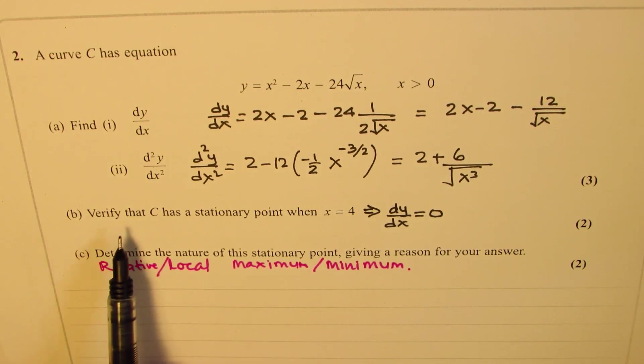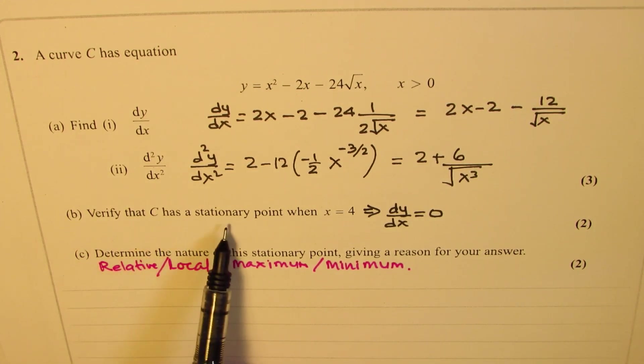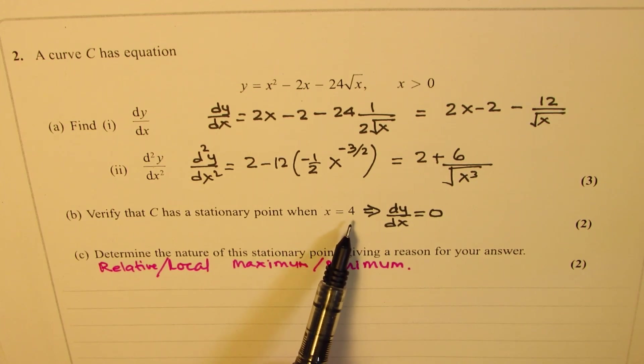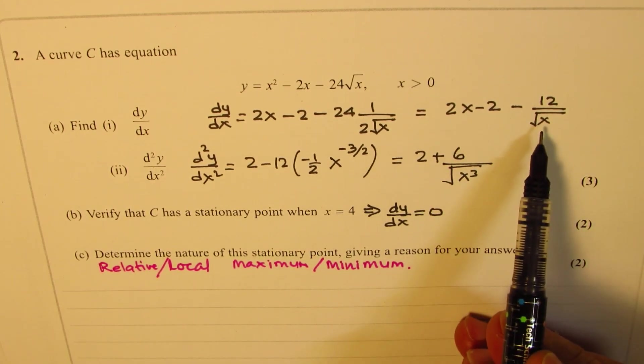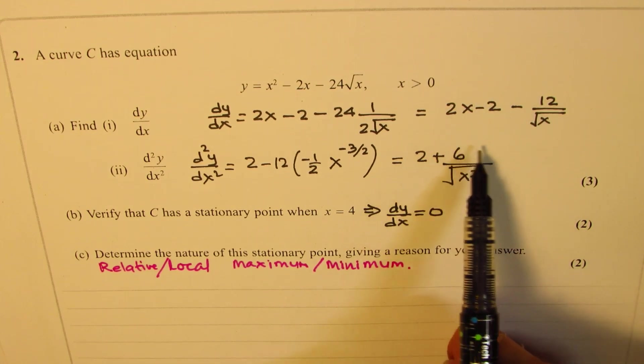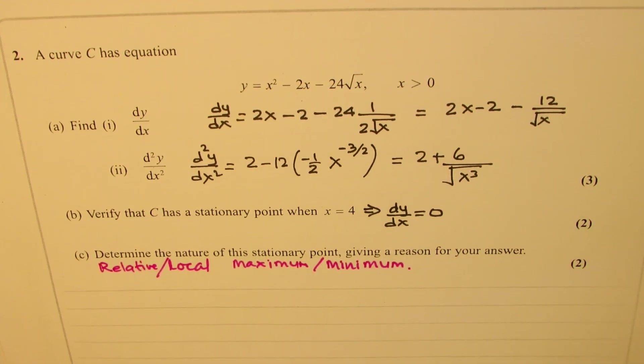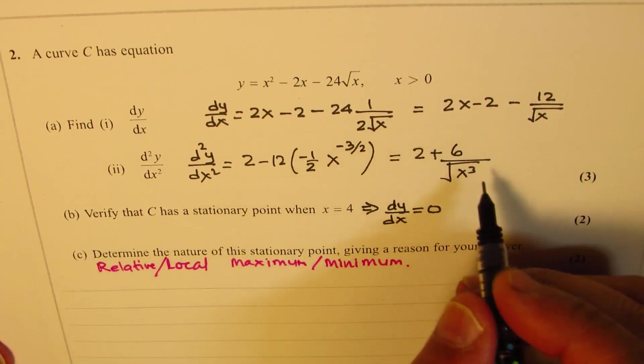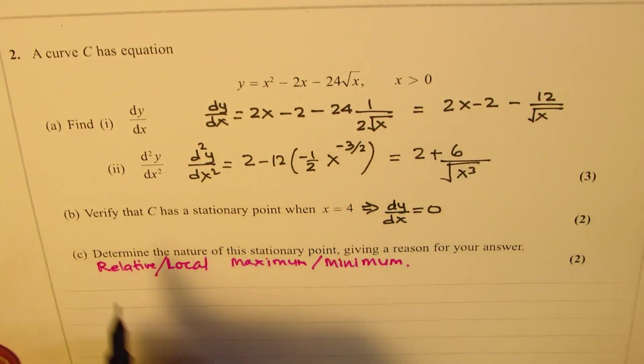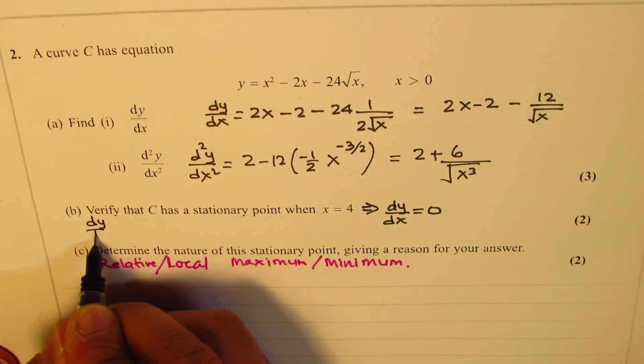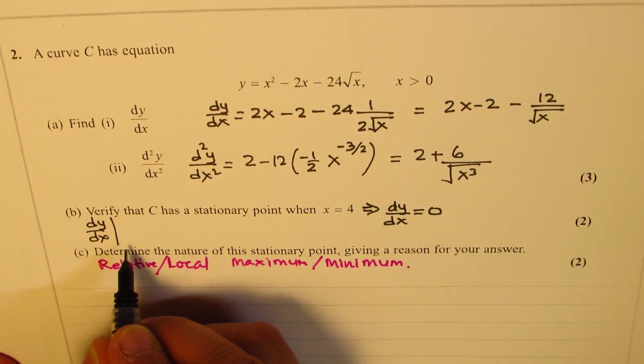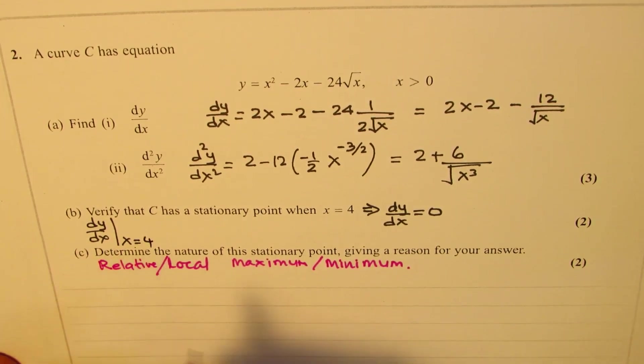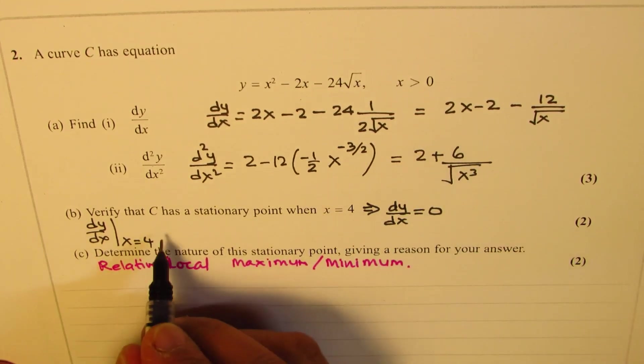Part B is verify that C has a stationary point at x equals 4. It really means that if I write 4 here, will it be 0 or not. That's what it means, so let's verify. So what we are going to do now is we know dy/dx, so we'll find dy/dx at x equals 4 at this point. So we'll substitute 4 here.